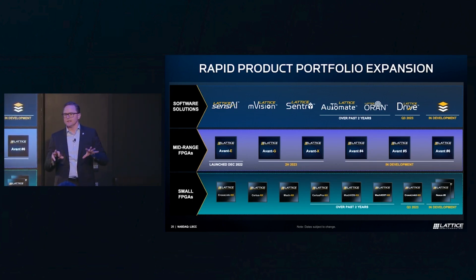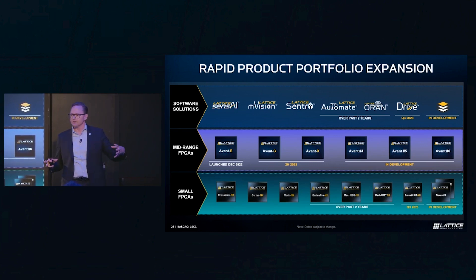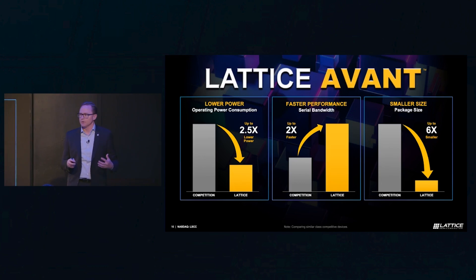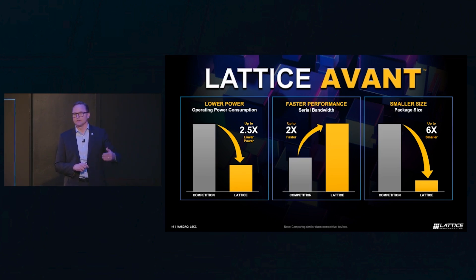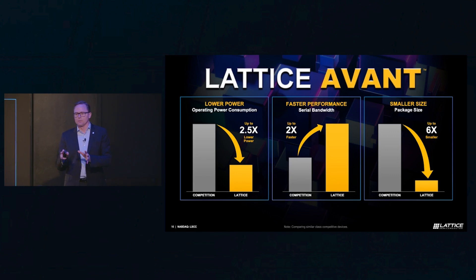If you asked what is the single thing we're most excited about with Lattice moving forward — this is it. We are in the middle of the biggest product expansion that this company has ever done in its 40-year history. And it's not just the number of products we're bringing out — we're bringing out incredibly competitive, very differentiated products. This is measured data we shared at the Avant launch in December comparing Avant to other FPGA competitors, showing Avant is up to 2.5 times better power efficiency than our competition, with higher performance, and up to six times smaller physical package size.